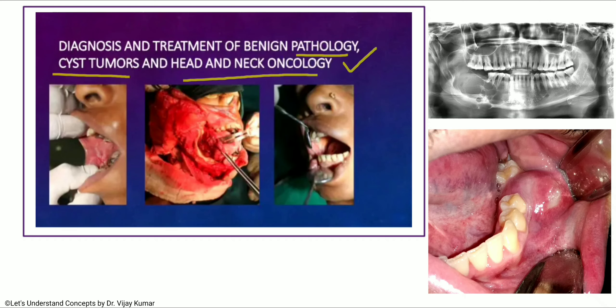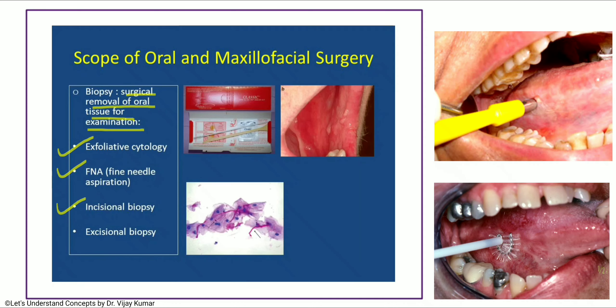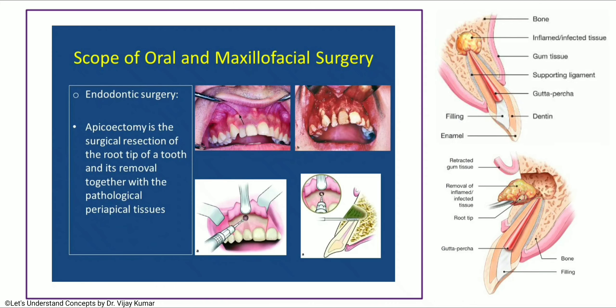Periradicular surgery, also known as endodontic surgery, includes apicoectomy as a surgical procedure to remove all pathological periapical tissue. The procedure involves giving an incision, reflecting the flap, performing an osteotomy to build a window over the apex of the tooth, then doing root resection, and finally placing retrograde filling material before packing the wound.